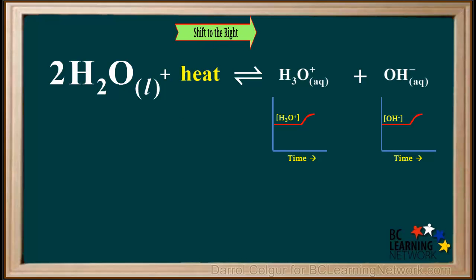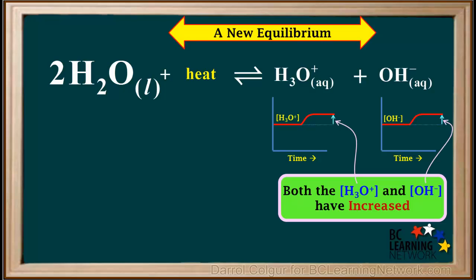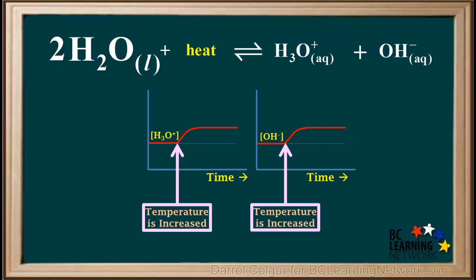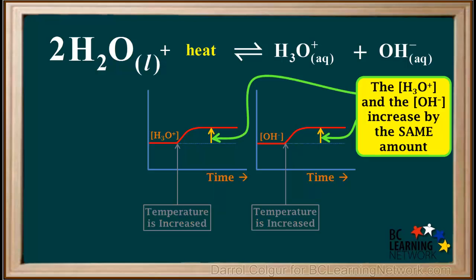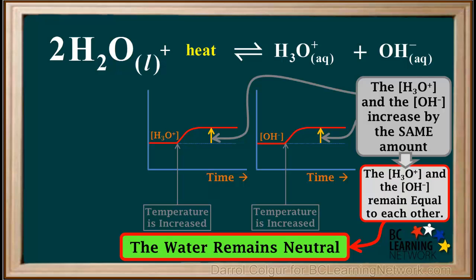As the shift to the right occurs, the hydronium and the hydroxide ion concentrations increase. Water is a liquid, so its concentration does not change. After the shift, a new equilibrium is established in which the concentrations of hydronium and hydroxide are both higher than they were before. It is important to realize that when the temperature increases, the concentrations of hydronium and hydroxide increase by the same amount and remain equal to each other. Therefore, water remains neutral.